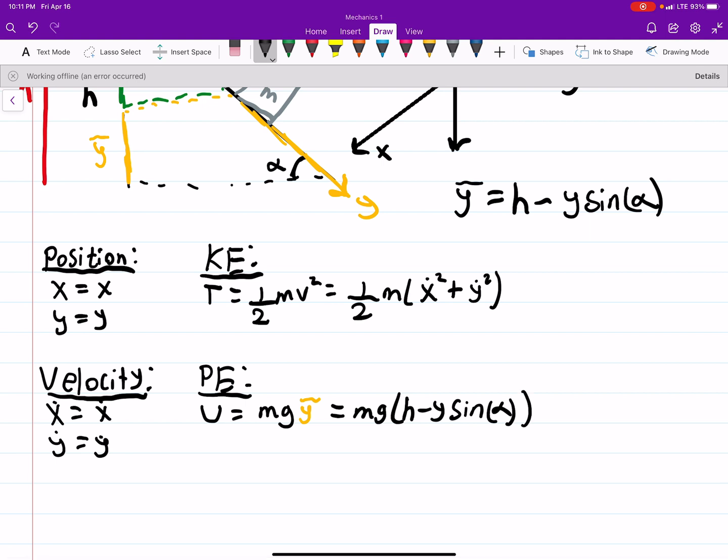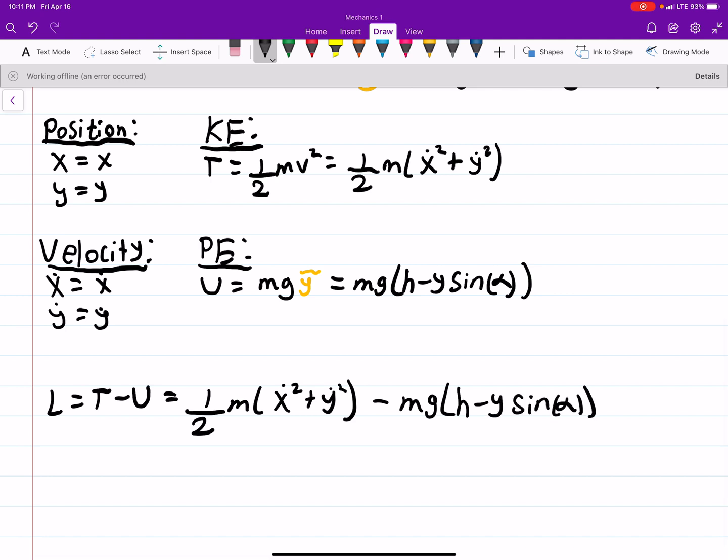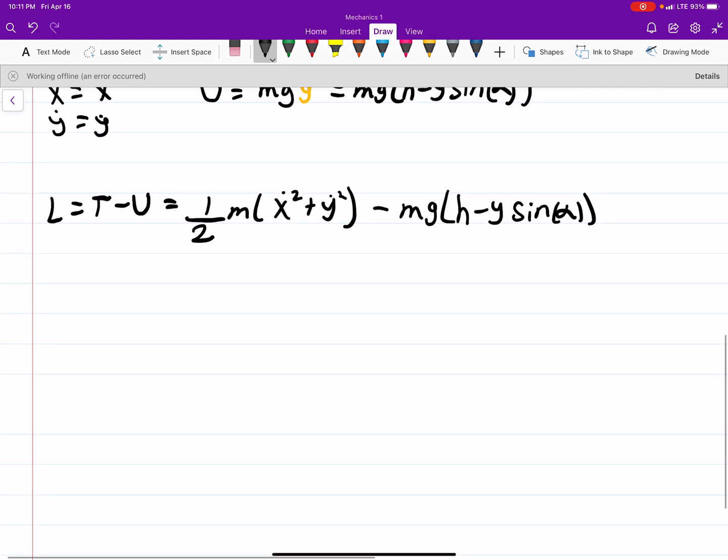So now that we have our kinetic energy and potential energy, we can get our Lagrangian, and that's T minus U. Which is one half m x dot squared plus y dot squared minus mg h minus y sine alpha. So that's our Lagrangian. And we want to split this up into x motion and y motion. That's what the problem wanted.